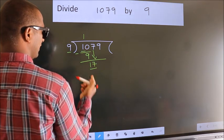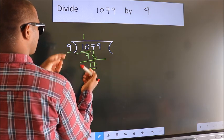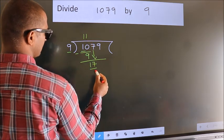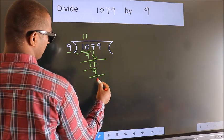So 17. A number close to 17 in the 9 table is 9 ones, 9. Now we subtract. We get 8.